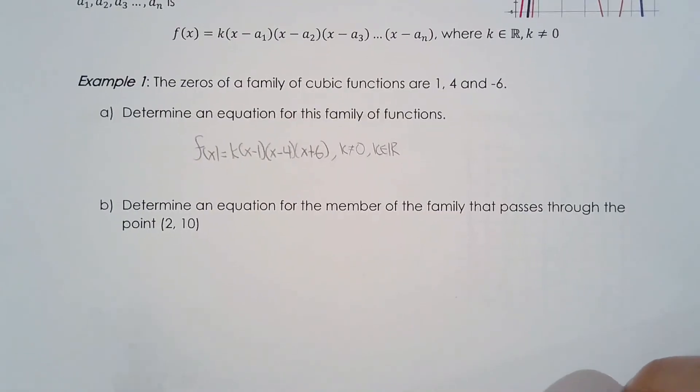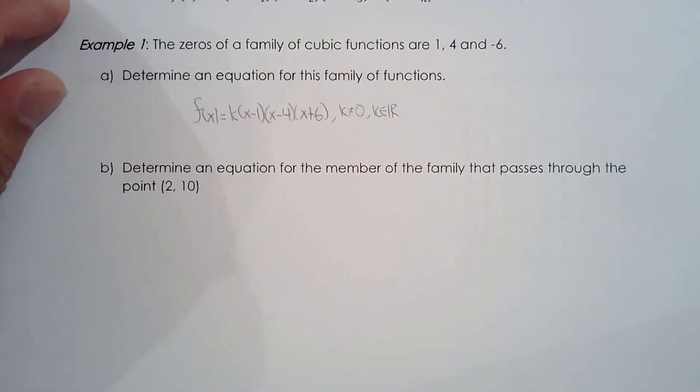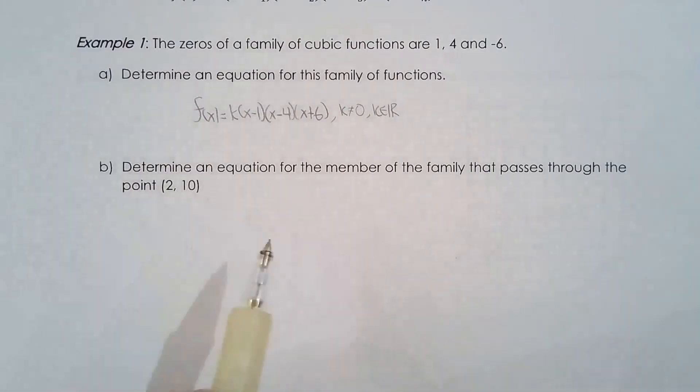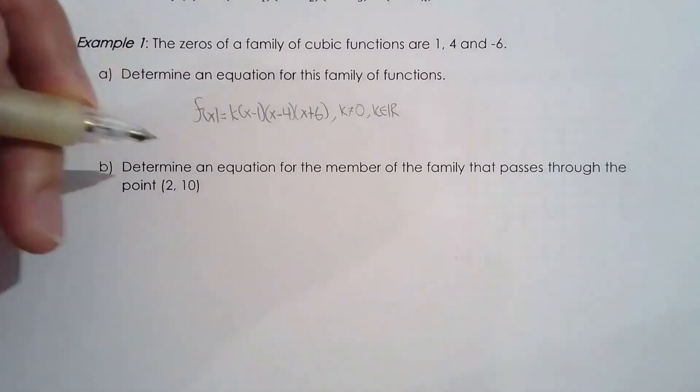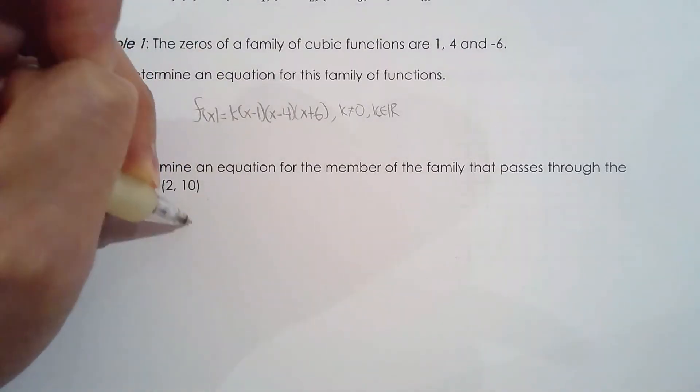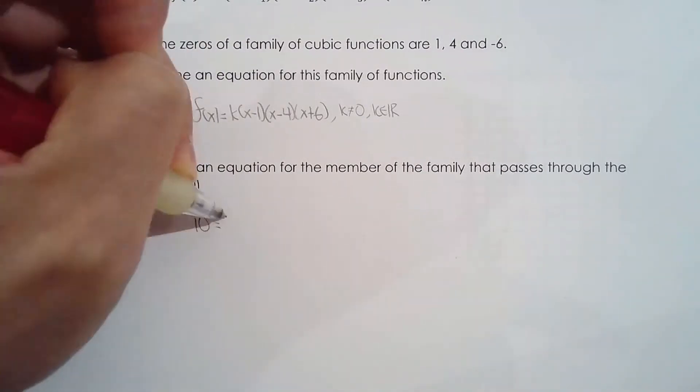All right so we can go from a family of cubic functions to a particular member of that family. What do you have to do or what you need is a point. Some information that allows you to solve for k. So this is very reminiscent of what you did in chapter one when you're given the graph and a point.